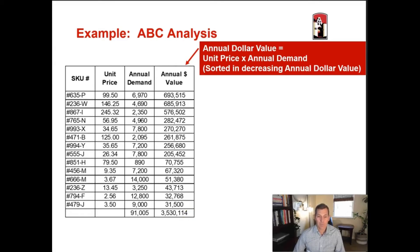A couple of things to keep in mind: your highest-priced item — in this example SKU 867-I at $245 each — does not necessarily have the highest annual value, because you must also consider annual demand. Annual demand multiplied by unit price gives you annual value, and sometimes even your least expensive items, if they have a very high annual demand, can be A items with a high annual value.